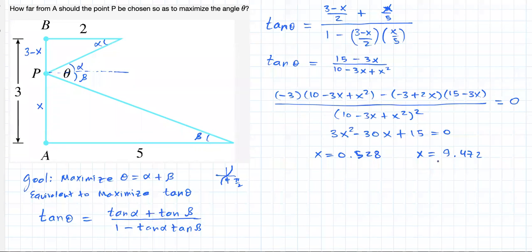Now, this solution doesn't make sense. Why? Well, notice x is bounded below by 0, bounded above by 3. So we just take this guy. That's a serious candidate to maximize the value of tangent of theta and therefore to maximize theta.